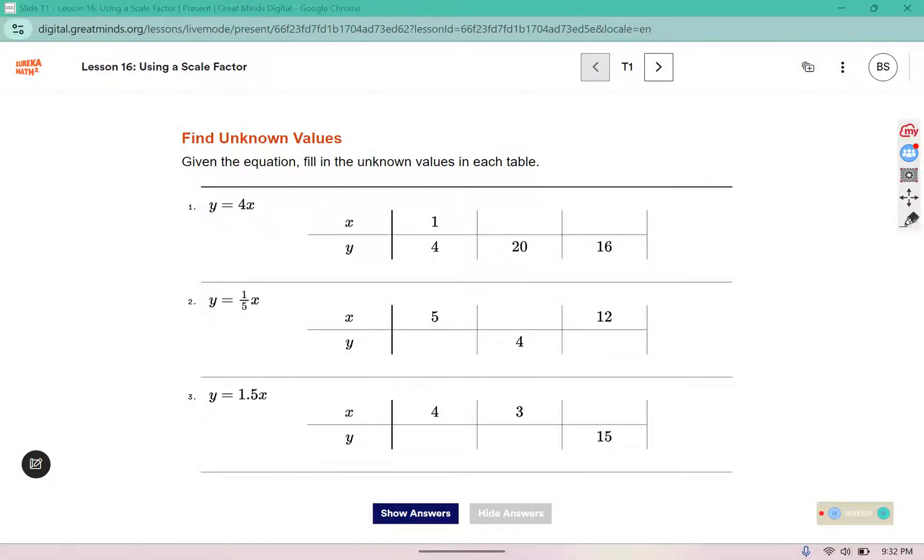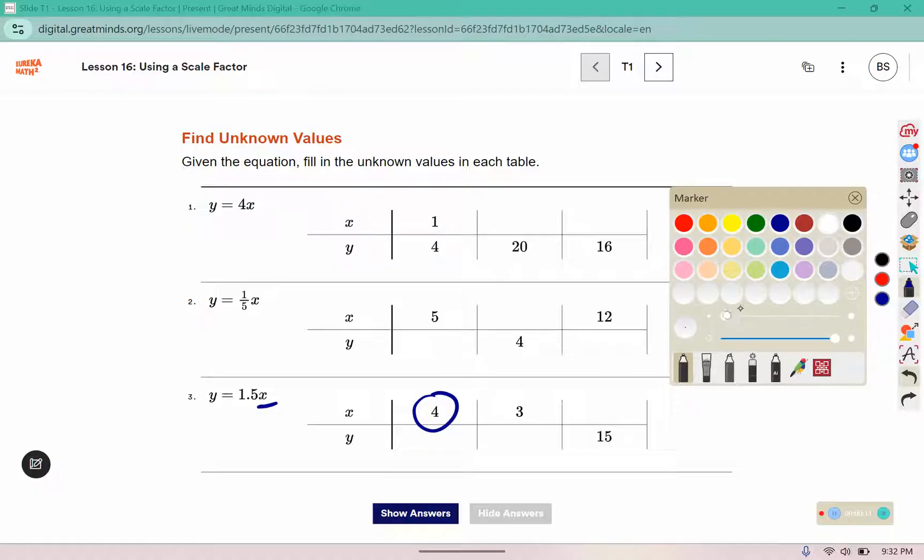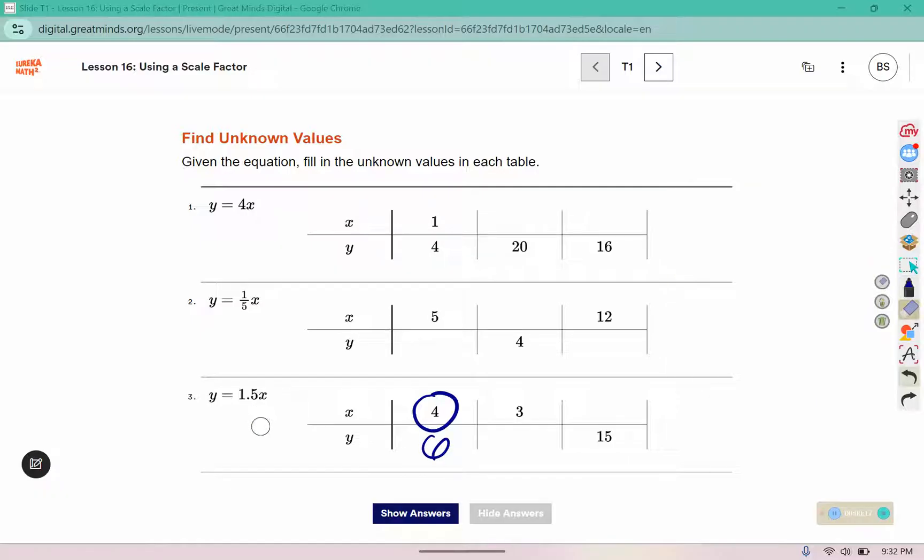We're going to use the equation to help us fill in the table. So this is going to be 4 times 1.5. Four times 1 is 4, and half of 4 is 2, so 4 and 2 together would give me 6. Three times 1.5: 3 times 1 is 3, and half of 3 is 1.5, so 3 plus 1.5 would be 4.5. Then we're going to divide because it gives us the y this time, it doesn't give us the x. So 15 divided by 1.5, and that should be 10.